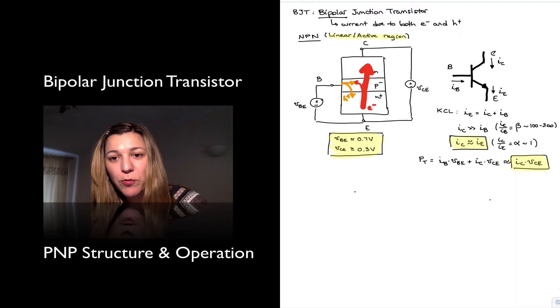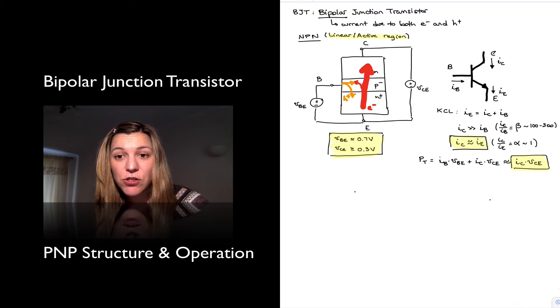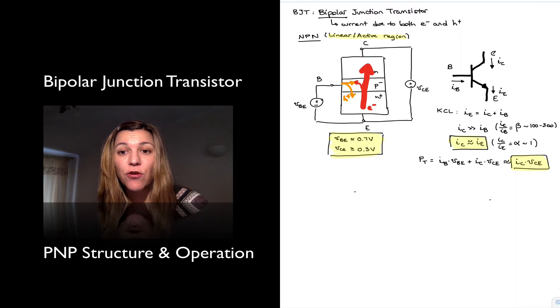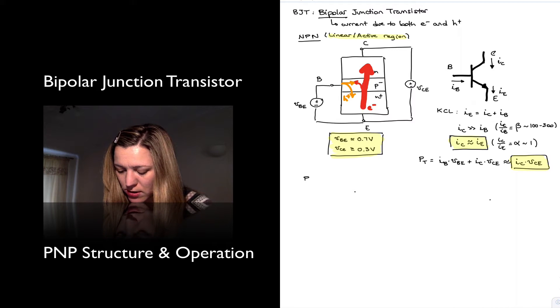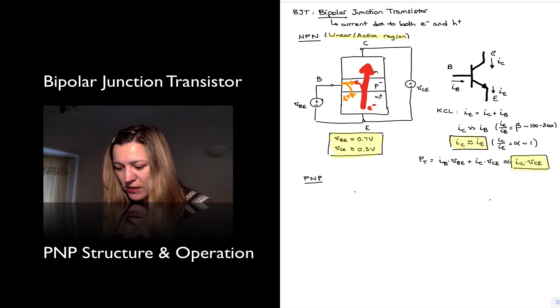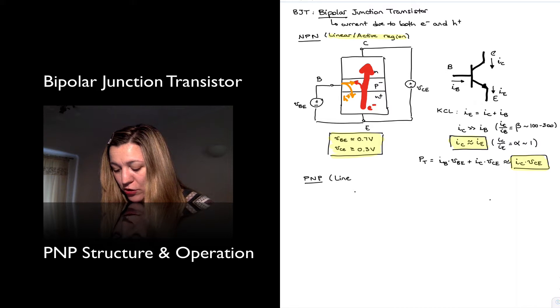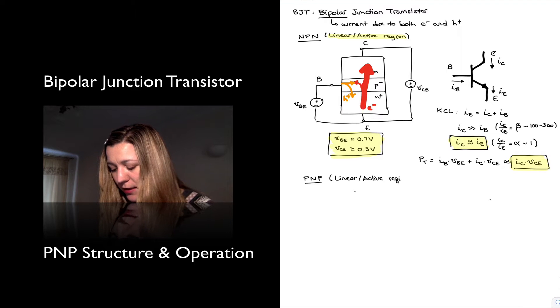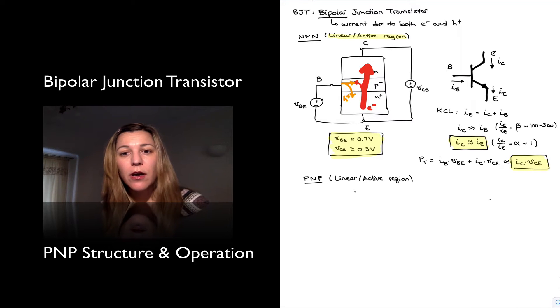Alright, so we just saw the structural operation of the NPN transistor, and now we're going to take a look at the operation and structure of the PNP transistor, the complementary transistor. It's actually very similar, so we're going to go a little faster. And again, we're talking about the operation in the linear active region. This is the one that we're going to utilize for amplifiers and small signal amplification purposes.